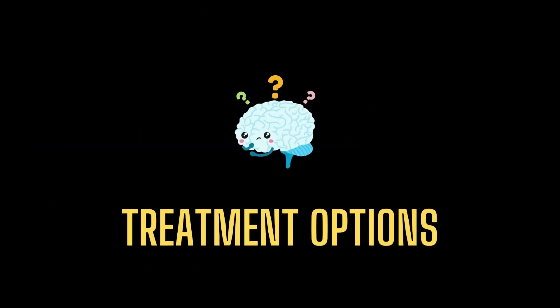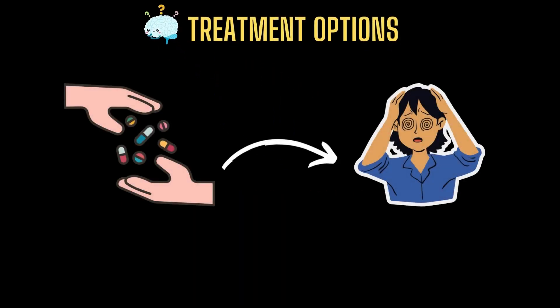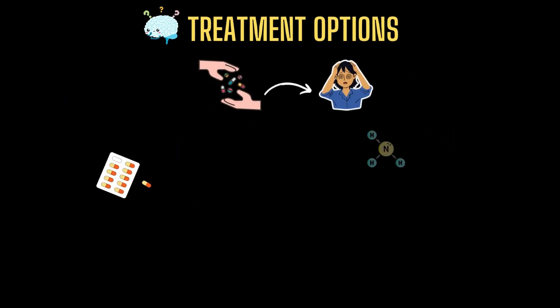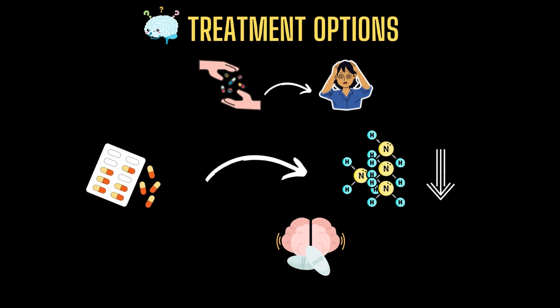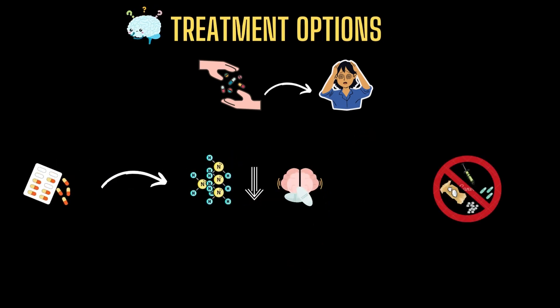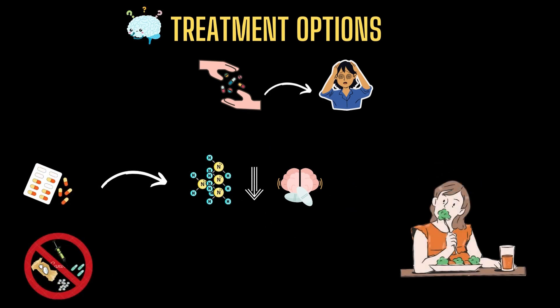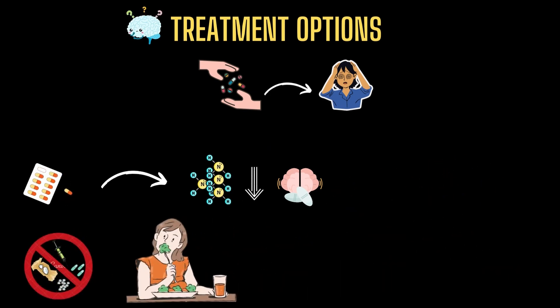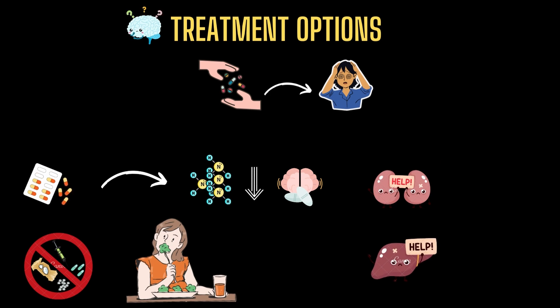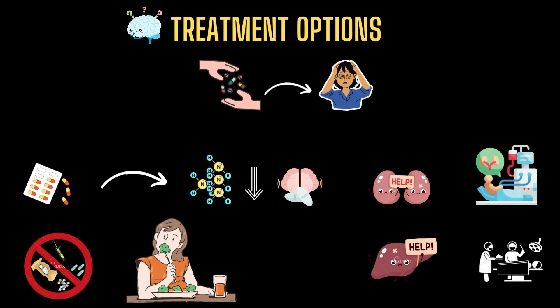The treatment you require is determined by the cause of your encephalopathy. Your doctor might suggest medications that lower ammonia levels or stop seizures, stopping a drug that you've been taking for a long time, or changing your eating habits and supplements for nutrition. If your illness is caused by liver or kidney difficulties, you may need dialysis or an organ transplant.